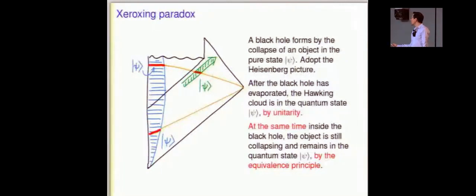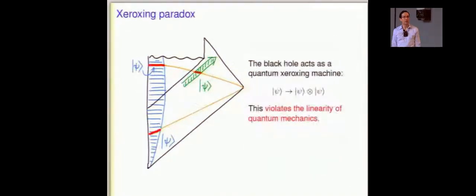Now, at the same time, at a space-like related distance, inside the black hole, we have this star happily collapsing away. And again, I can choose this so that it's still very far from the singularity and curvatures are not high. And the star, by the equivalence principle, crossed in unhindered. Nothing happened to it. It's still in the quantum state psi.